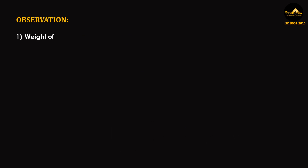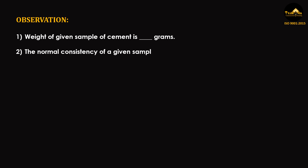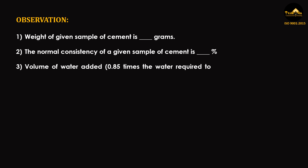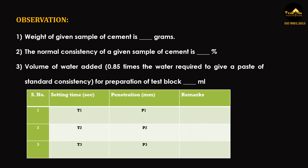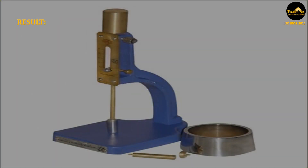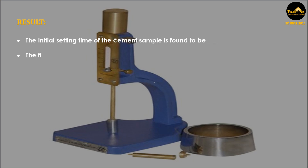Observation: Weight of given sample of cement is noted. The normal consistency of the given sample of cement is recorded. Volume of water added is 0.85 times the water required to give a paste of standard consistency for preparation of the test block. The above table represents the readings of setting time and the penetration of the needle. Result: The initial setting time of the cement sample is found to be [recorded value]. The final setting time of the cement sample is found to be [recorded value].